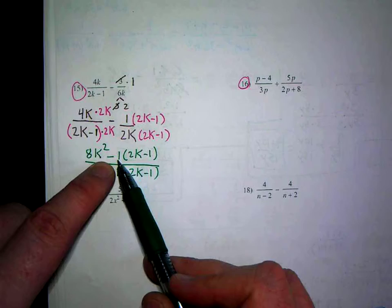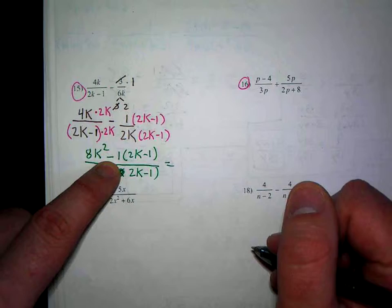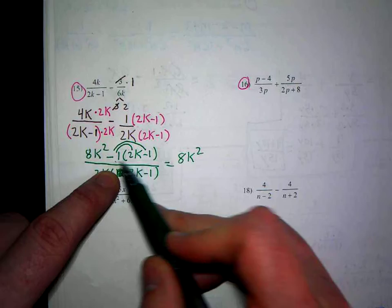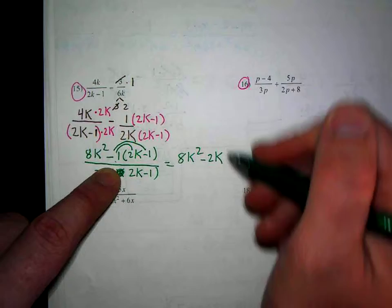So what do I do with this minus 1? Distribute. So I'm going to distribute it to the 2k and the minus 1. So I get 8k² minus 1 times 2k is minus 2k, and minus 1 times minus 1 is plus 1.